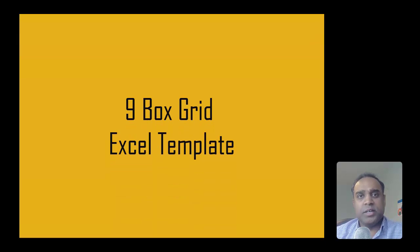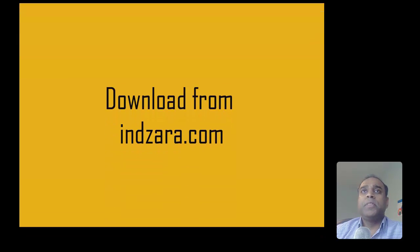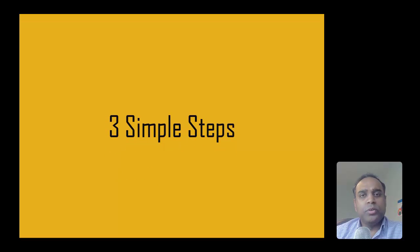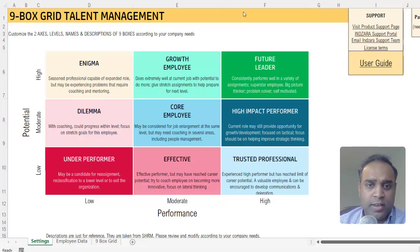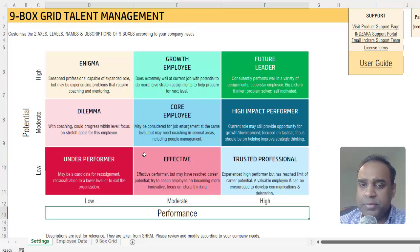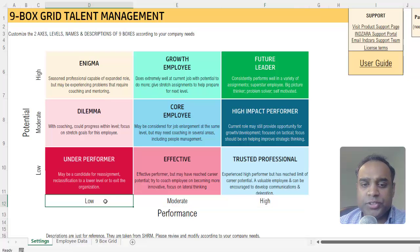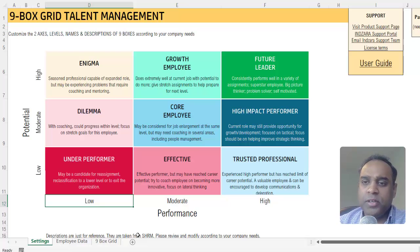For the final part of this video, let me talk about the Excel template from Inzara.com, which you can download — I will provide a link in the video description below. There are three simple steps to create your own customized nine-box grid. Now I have the Excel template open. The first step is to define the nine boxes according to your company's needs. You can customize the two axes — whether it is potential or performance — rename them, rename all nine boxes and their descriptions, and change the three levels within each axis. Customize it according to your company's unique needs.